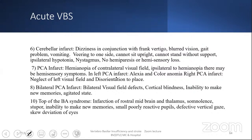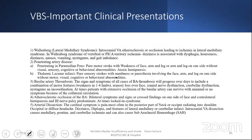PCA infarct causes hemianopia of the contralateral visual field with sparing of the macula; ipsilateral to hemianopia there may be hemisensory symptoms. Left PCA infarct may cause external color anomia; right PCA infarct causes neglect of the left visual field. Bilateral PCA infarcts cause bilateral visual field defects, cortical blindness, inability to make new memories, and agitated state. The most severe — top-of-the-basilar syndrome — includes infarct of the rostral midbrain and thalamus, spinal length stupor, inability to make new memories, small non-reactive pupils, defective upgaze, and skewed deviation. The Wallenberg syndrome, penetrating artery disease of paramedian pons, thalamic lacunar infarct, basilar artery thrombosis, atherosclerotic occlusion, and arterial dissection are all important clinical presentations.